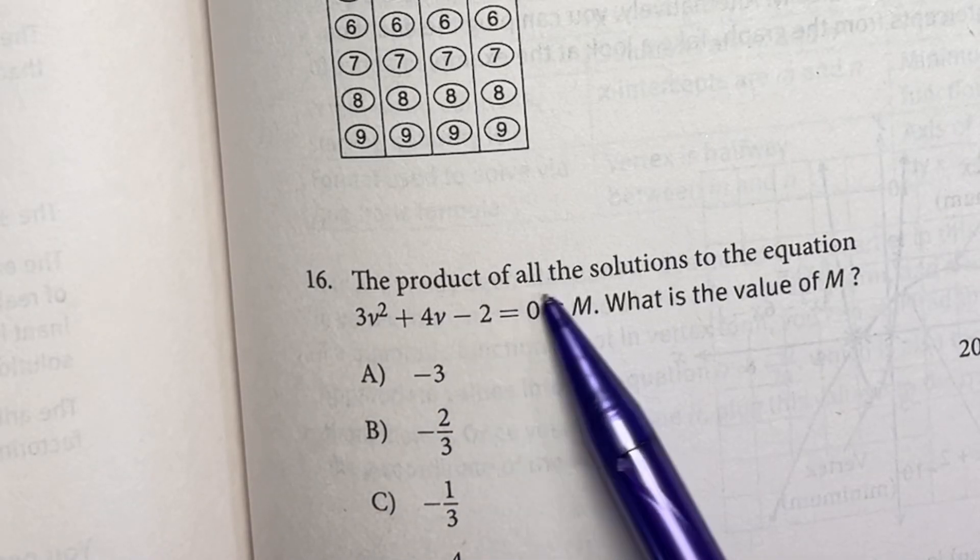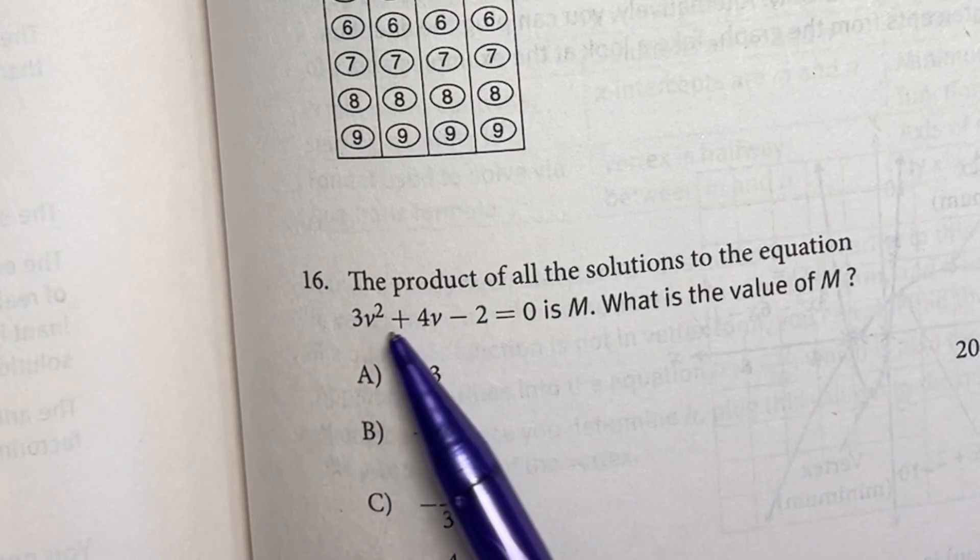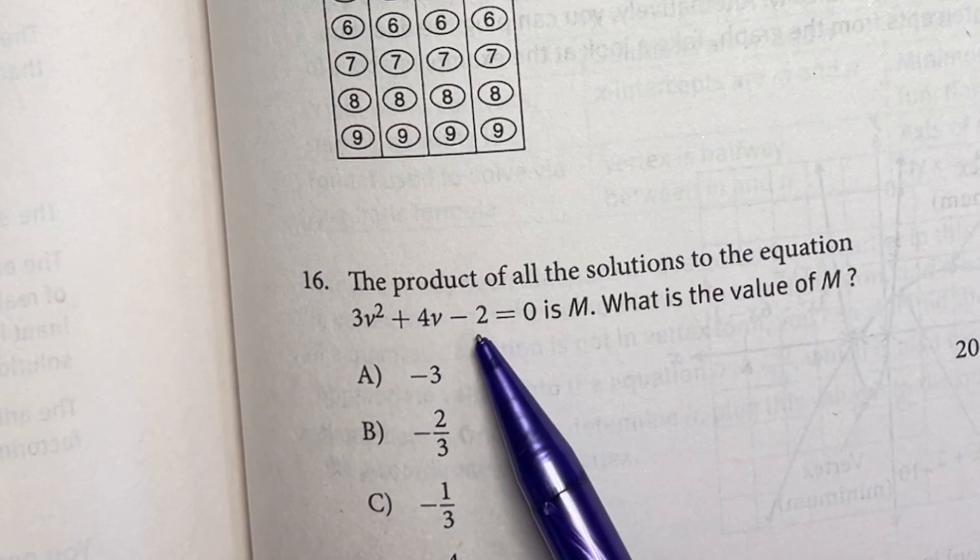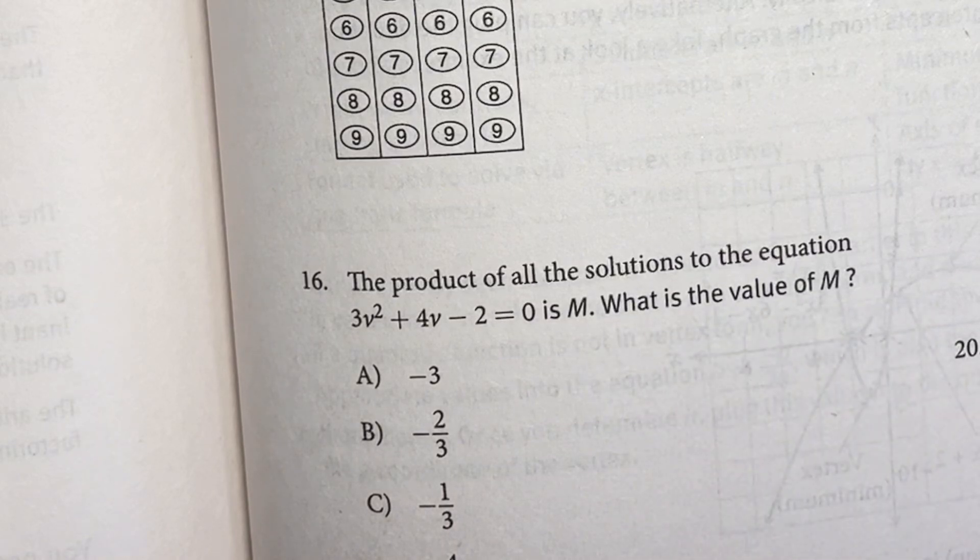The product of all the solutions to the equation 3v² + 4v - 2 = 0 is M. What is the value of M?